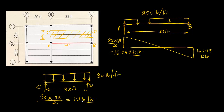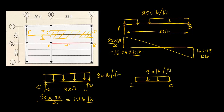Similarly we can calculate the load on beam EC, because we want to calculate the point load on the girder. For beam EC, the tributary area has a width of 10 feet, so we will have a uniform load distribution of magnitude 900 pounds per foot. The beam length is 20 feet, so the reaction at each end is 90 times 20 divided by 2, which equals 900 pounds.